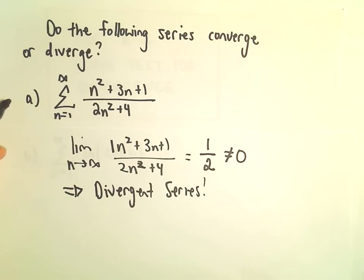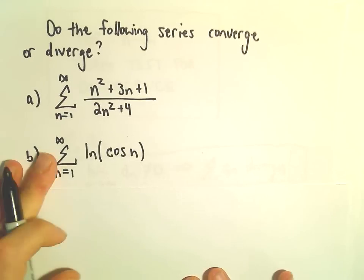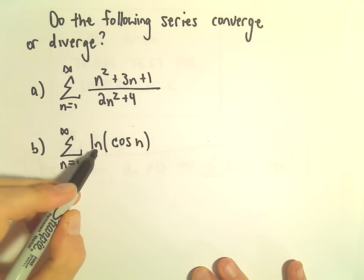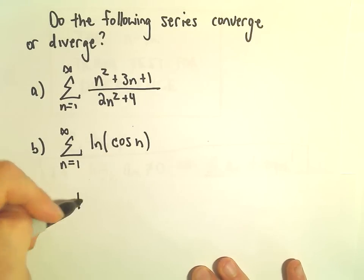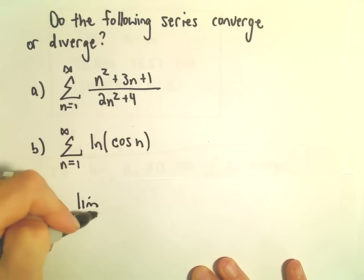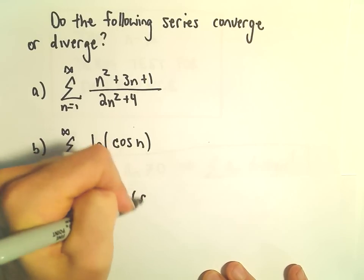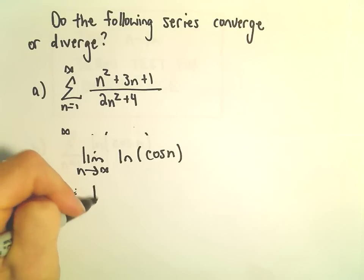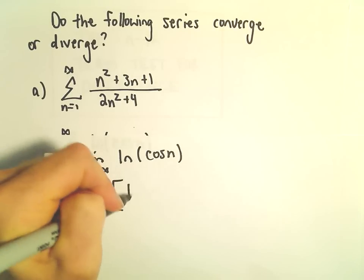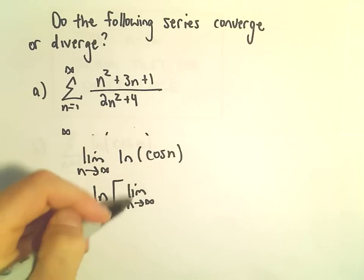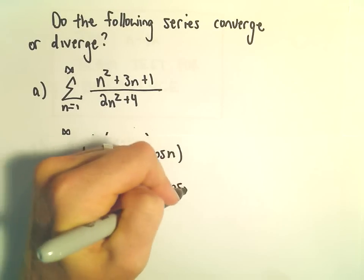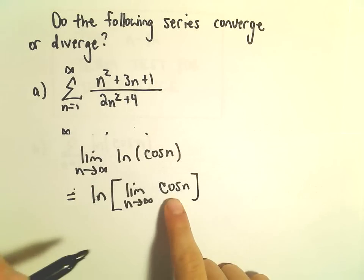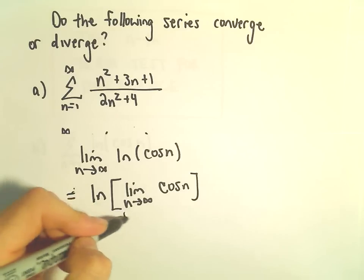Part B, we've got from n equals 1 to infinity of the natural logarithm of cosine n. Well, we'll take the limit as n goes to infinity of the natural logarithm of cosine of n. And limit laws say we can simply pull the limit inside. So we've got the natural logarithm of the limit as n goes to infinity of cosine n. But as n goes to infinity, cosine just keeps oscillating. So this limit simply does not exist.